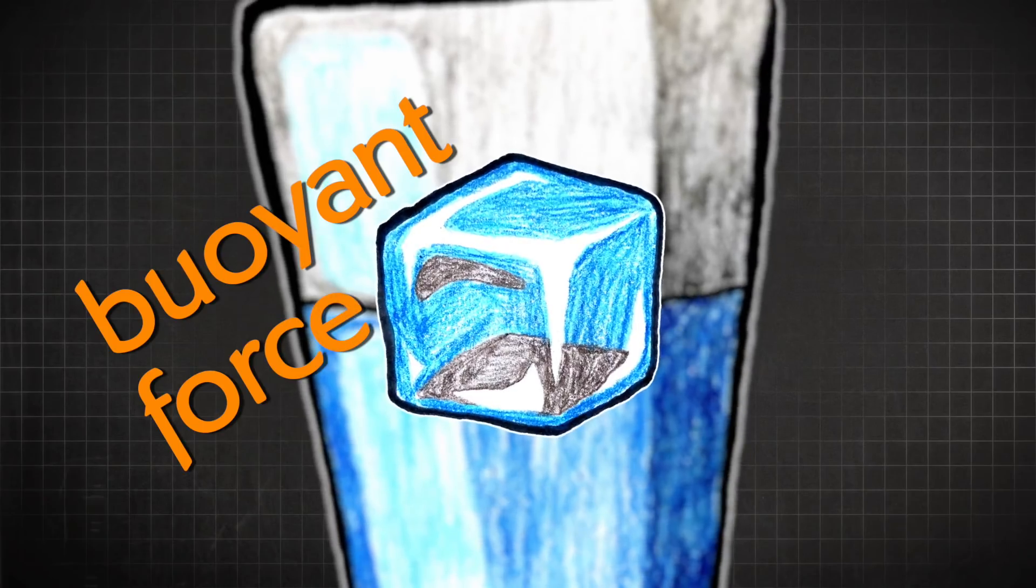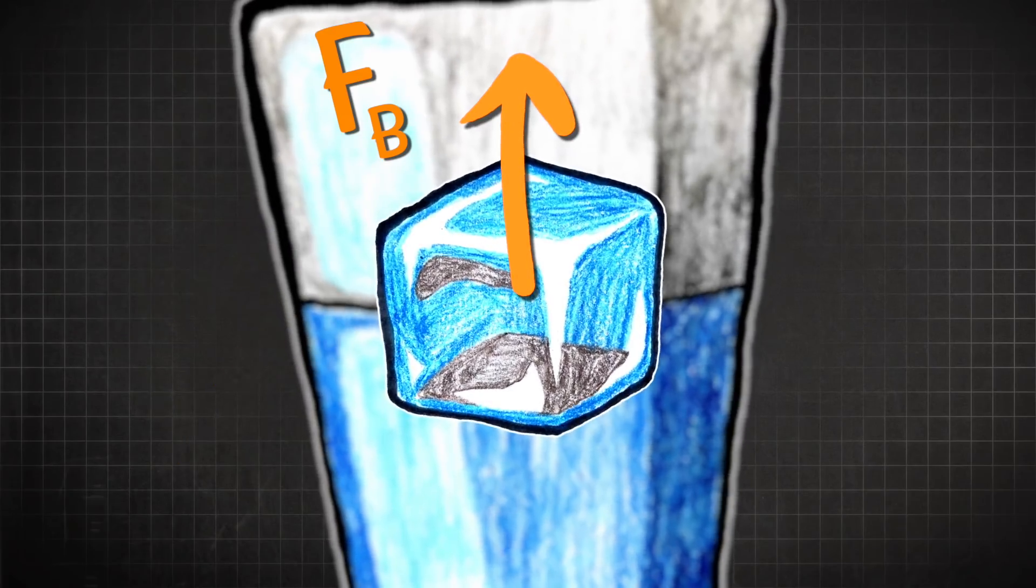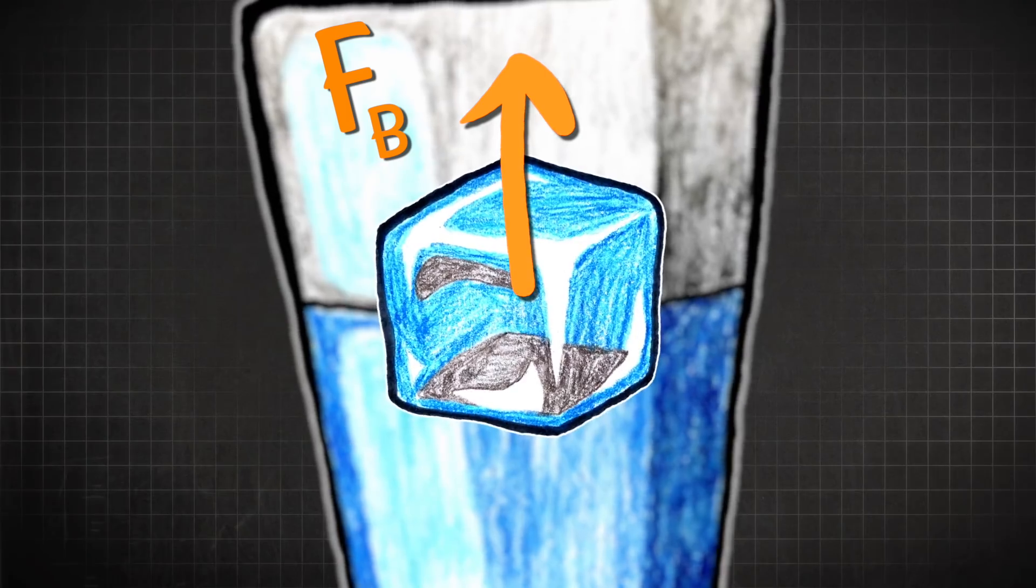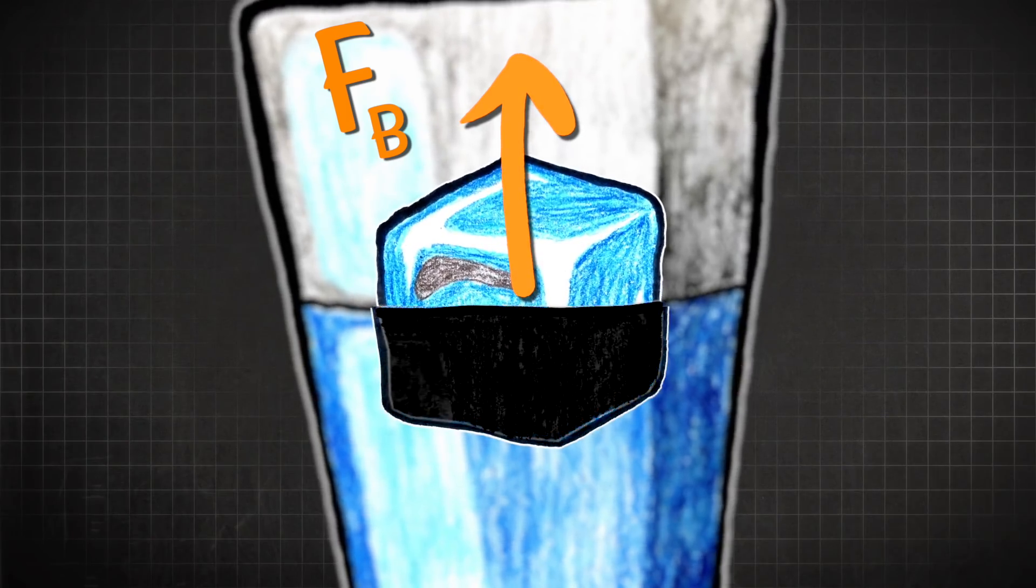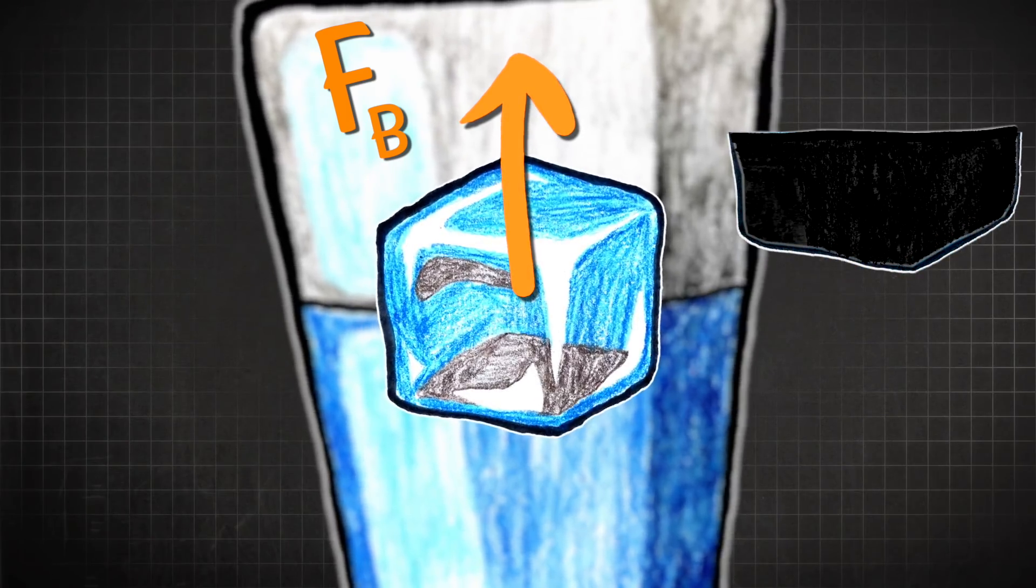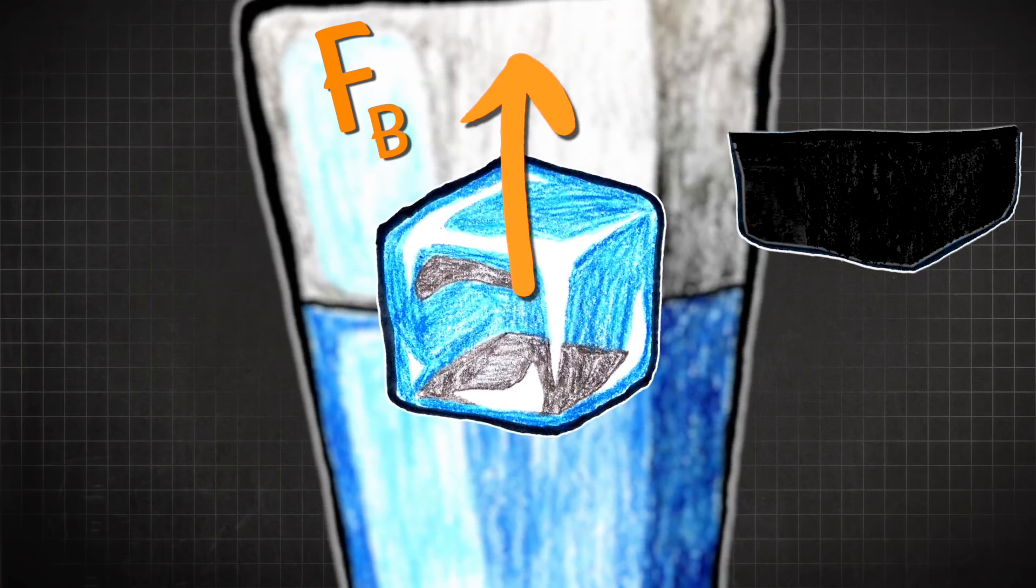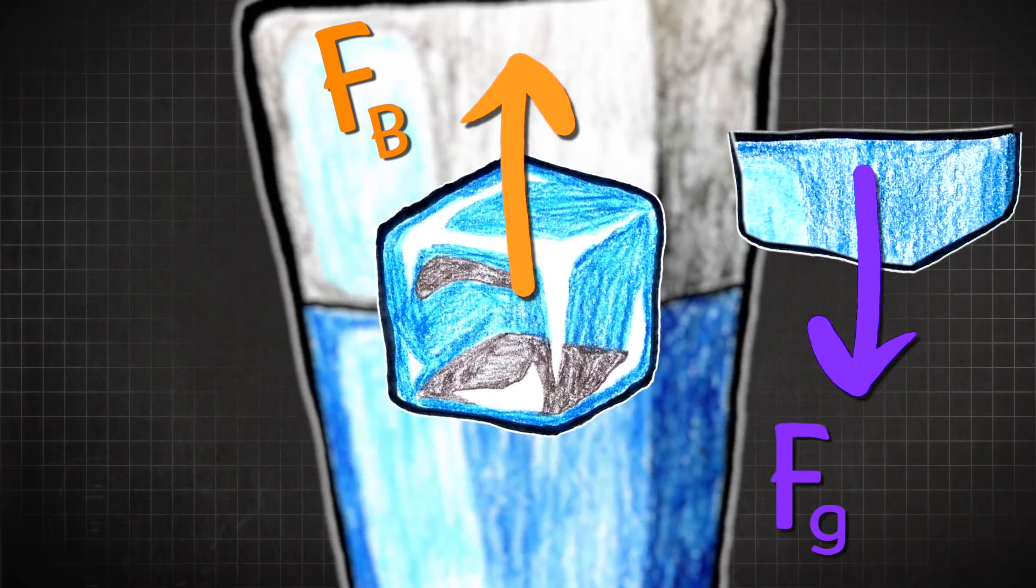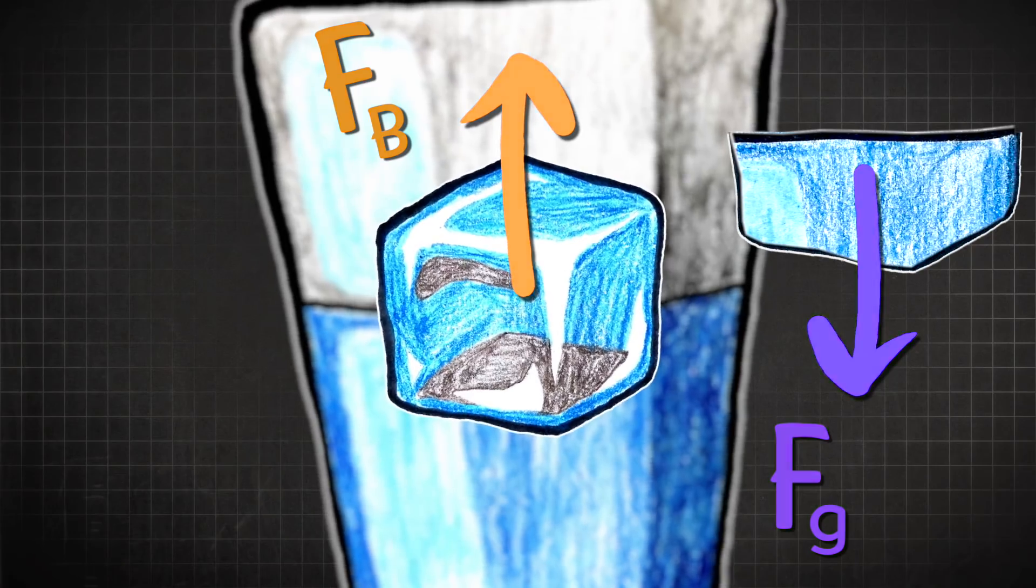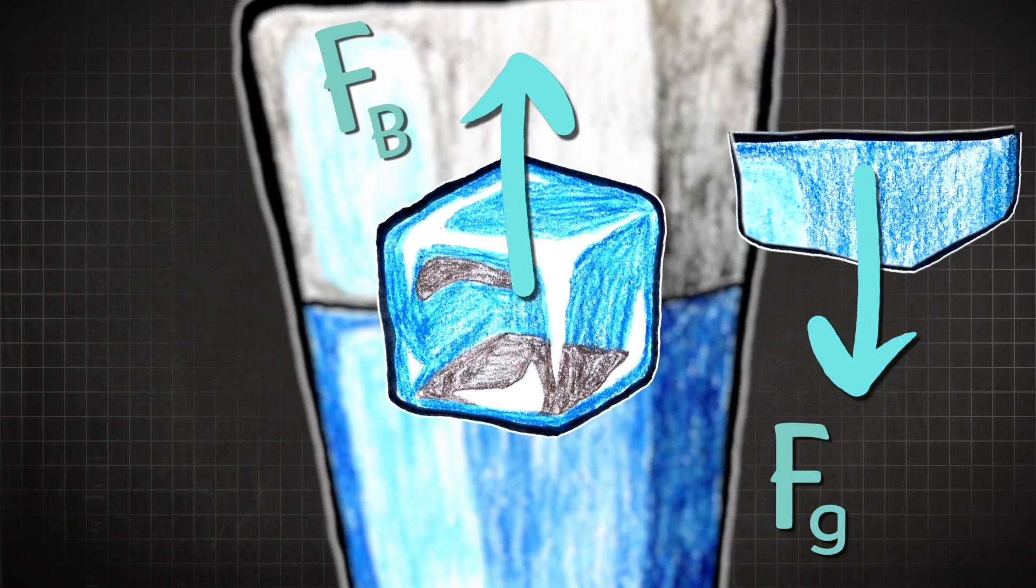So the buoyant force, which is the force pushing up on an object floating in water, is equal to the weight of the water displaced by the object. Meaning that if you took that space filled up by the ice rather than the water, and then filled it with water and weighed that water, then that weight, which is actually a force, would be equal to the buoyant force. That is Archimedes' principle. Thanks, Archimedes!